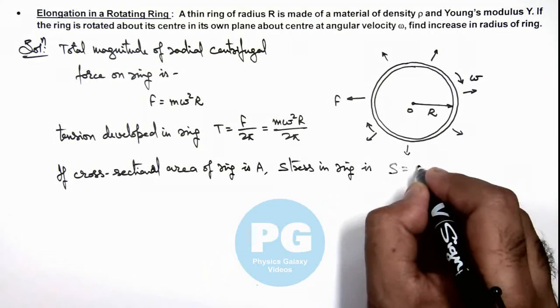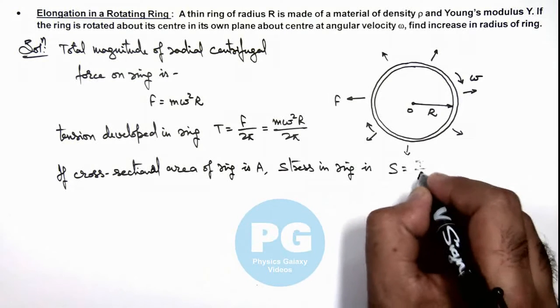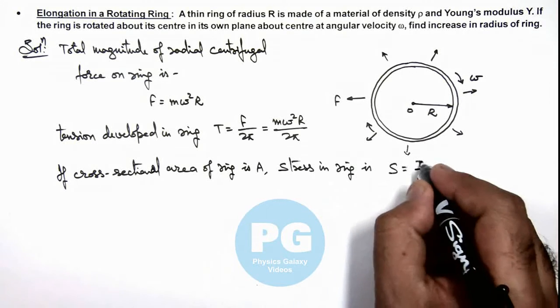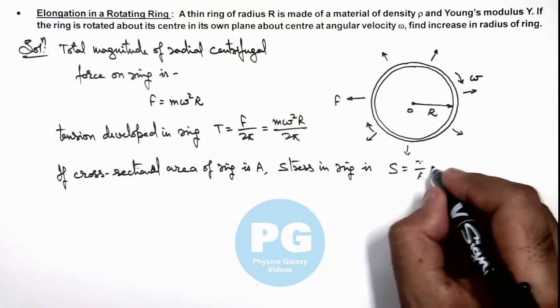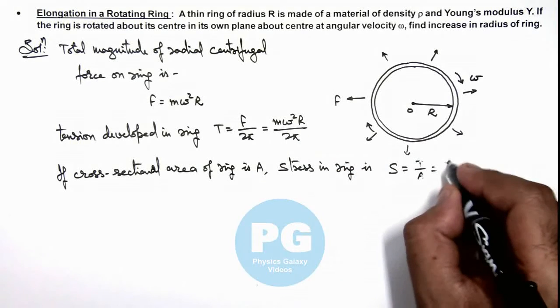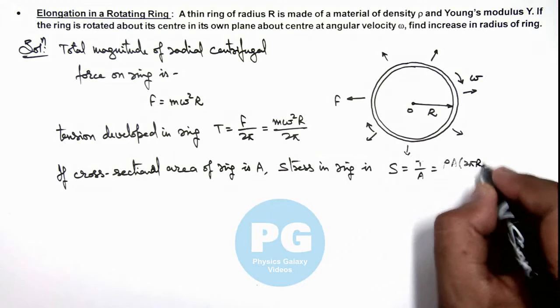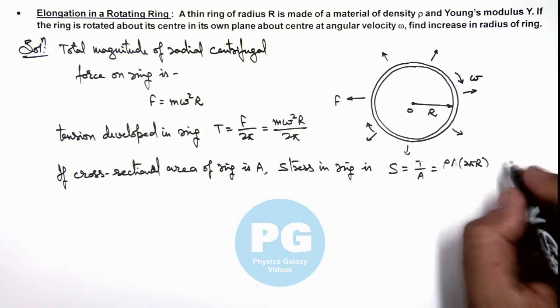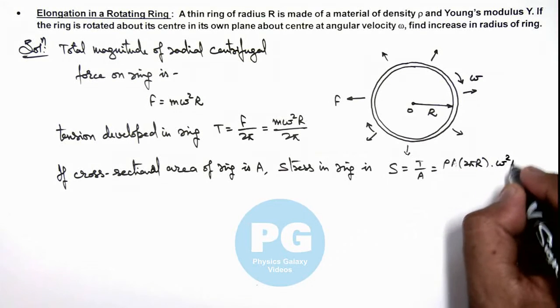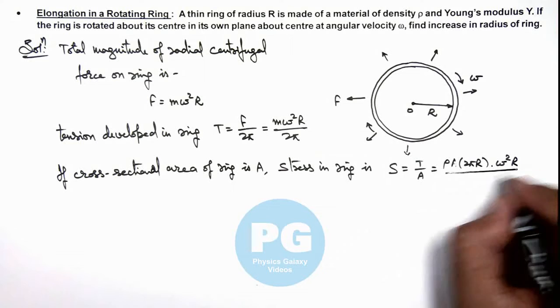This stress we can write as T divided by area. And in this situation, if we substitute the value, mass can be written as density multiplied by area multiplied by 2π R. This is the volume multiplied by density into ω² R divided by area multiplied by 2π.